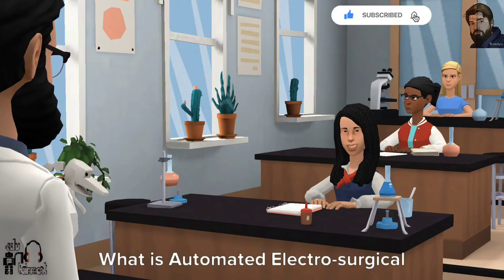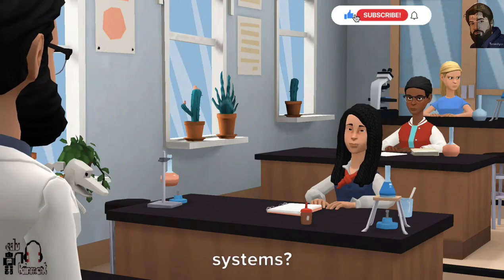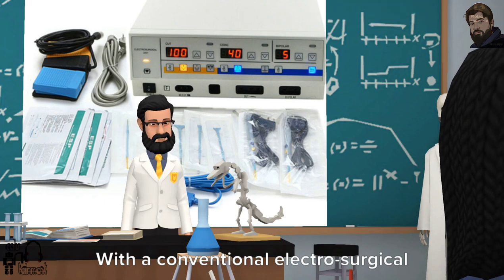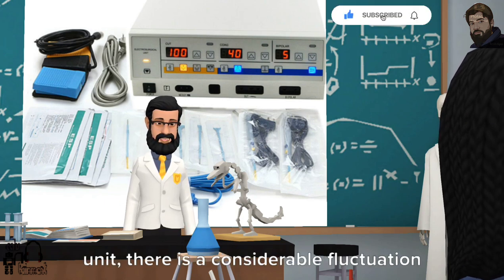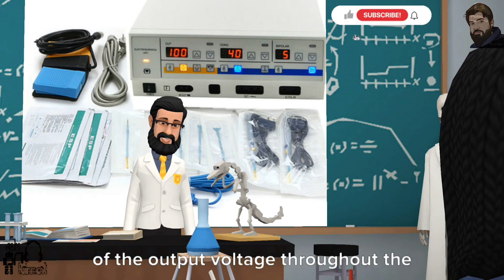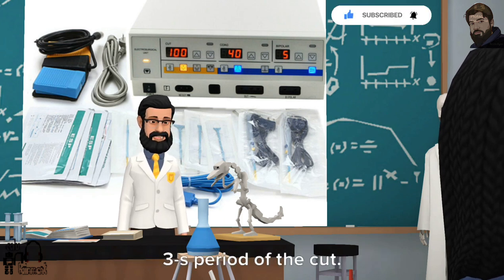What is automated electrosurgical systems? With a conventional electrosurgical unit, there is a considerable fluctuation of the output voltage throughout the 3 seconds period of the cut.